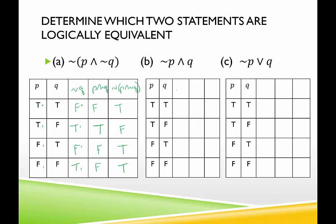For B, I need not P, and then not P and Q. So not P would be false, false, true, true. Not P and Q is a conjunction — I need them both to be true. True and false is false. False and false is false. True and true is true. False and true is false.